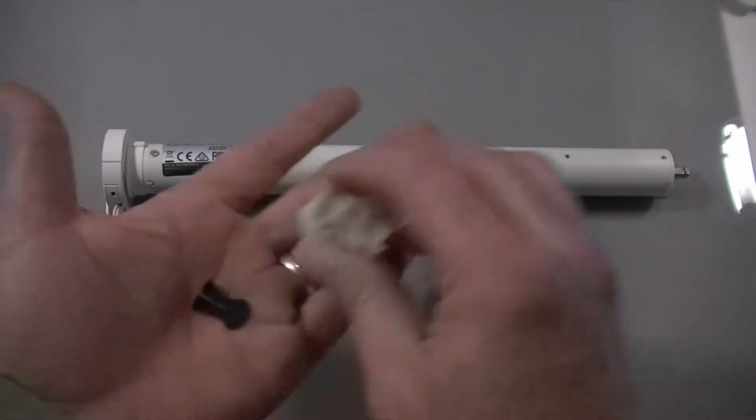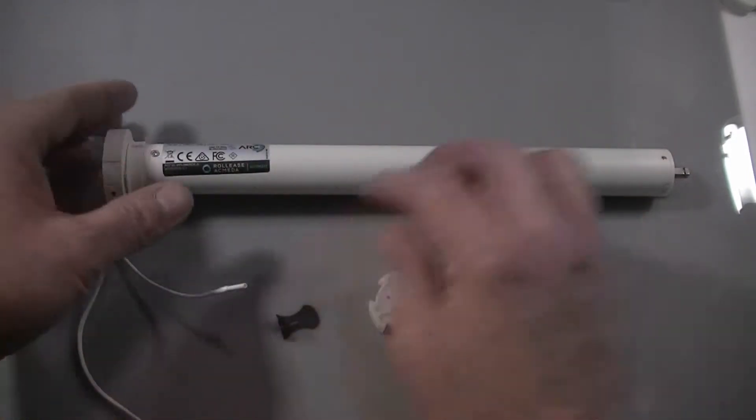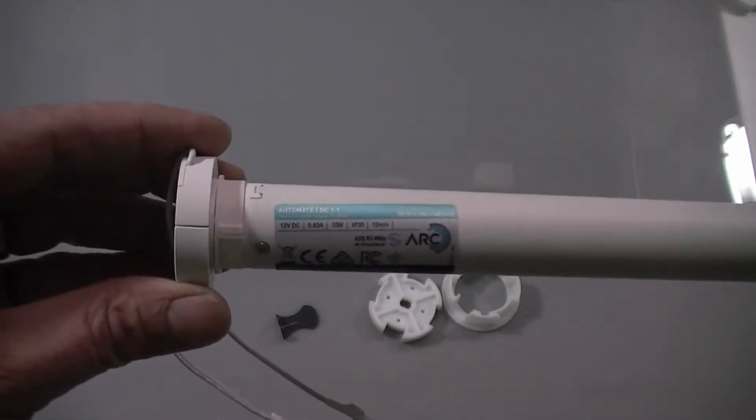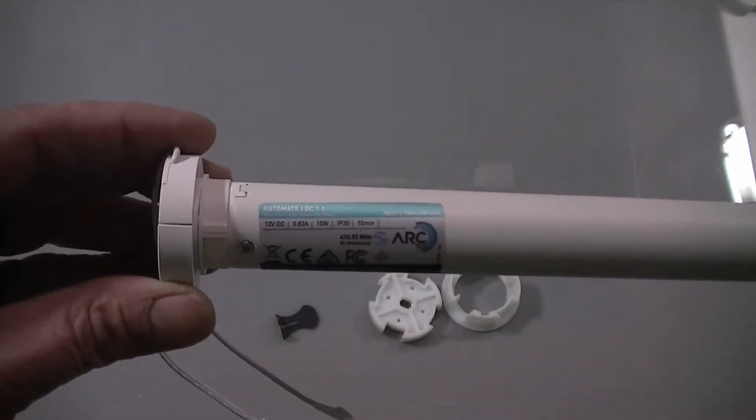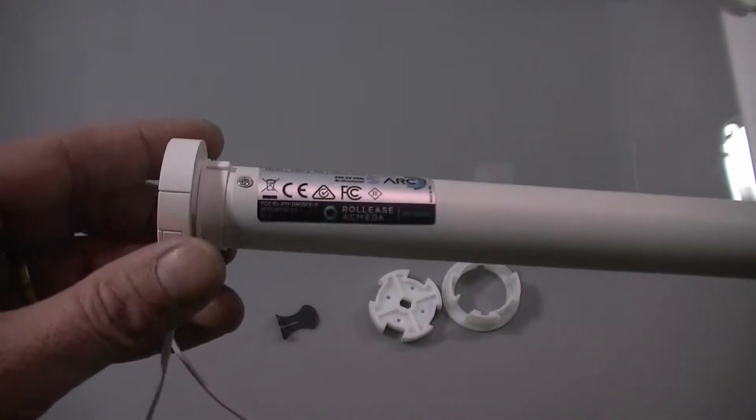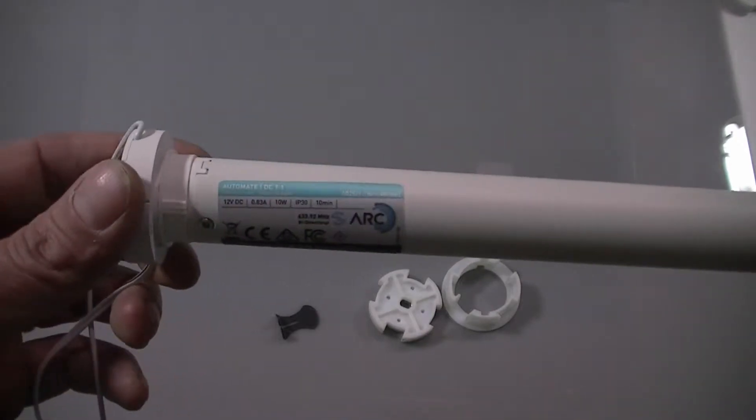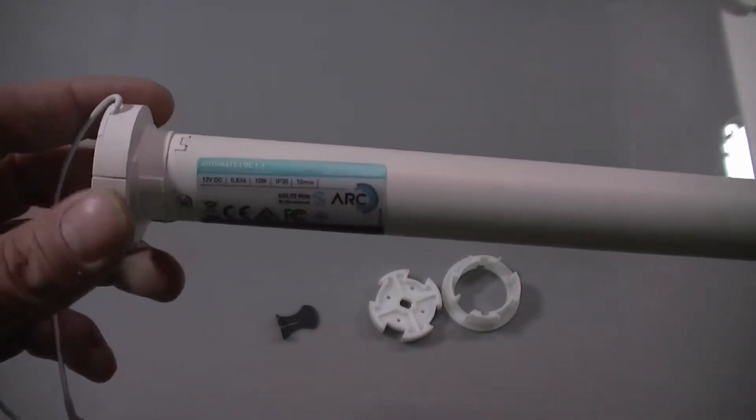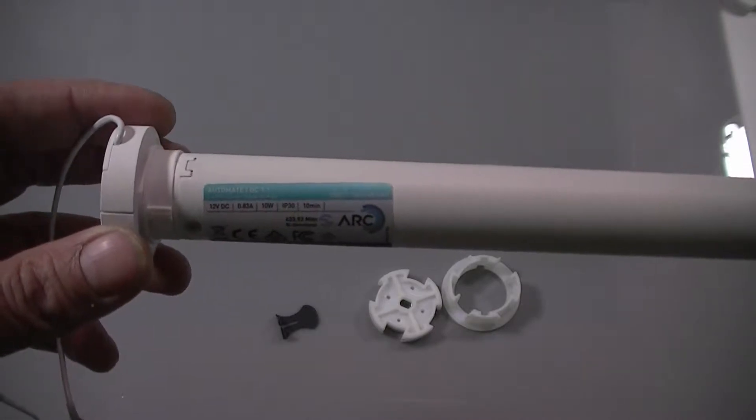We'll be installing this onto a Rollease 25 millimeter 1.1 newton meter motor. This motor comes in two versions, a 12 volt DC powered version and a battery powered lithium-ion version.